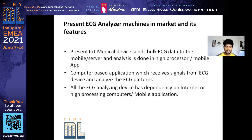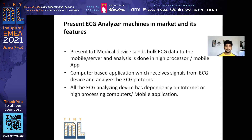In the present market, when we look at ECG analyzer devices, there are two categories. The IoT kind of device sends all bulk ECG data to a mobile or server, and the analysis is done in high-processing computing or mobile applications. On the other hand, computer-based applications receive all the ECG data and analyze it. Both categories require internet dependency and high-processing computers or mobile applications.